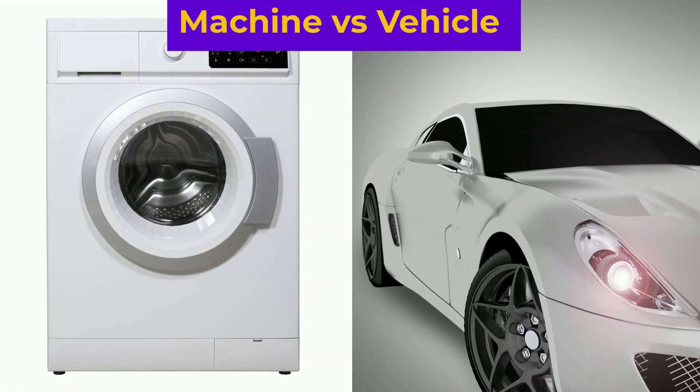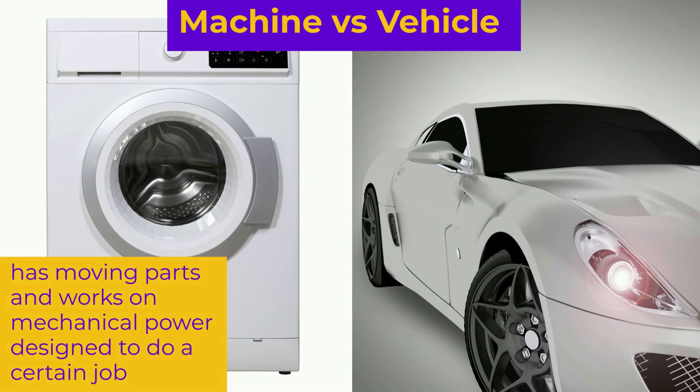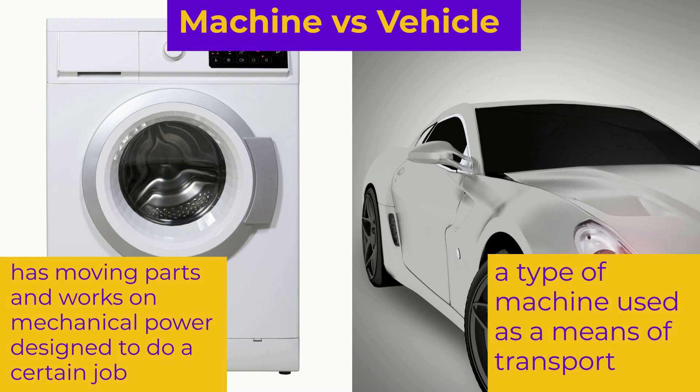A machine or a vehicle. A machine is a piece of equipment that has moving parts and works on mechanical power designed to do a certain job. A vehicle is a type of machine used as a means of transport. All vehicles are machines but not all machines are vehicles. A washing machine is not a vehicle for example.